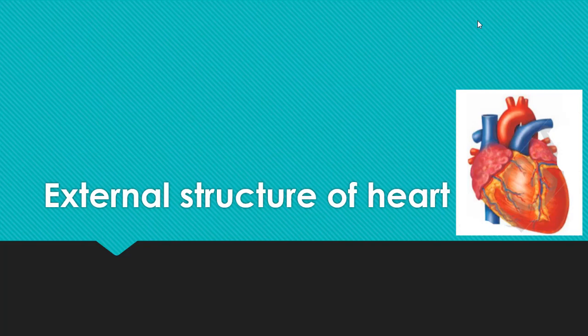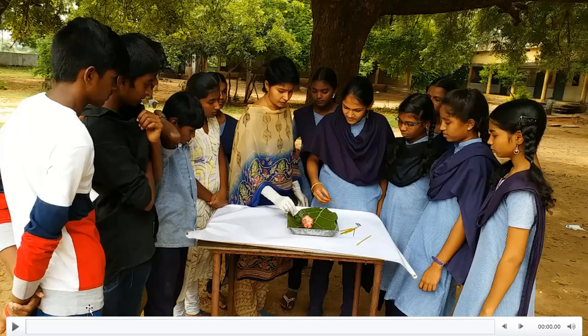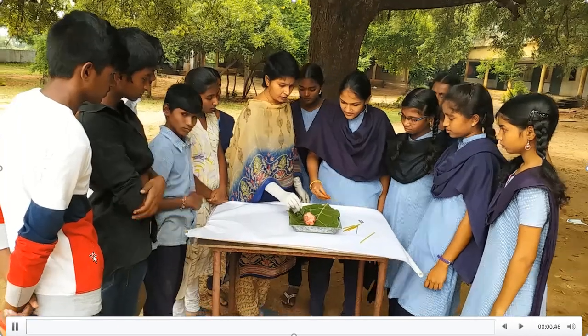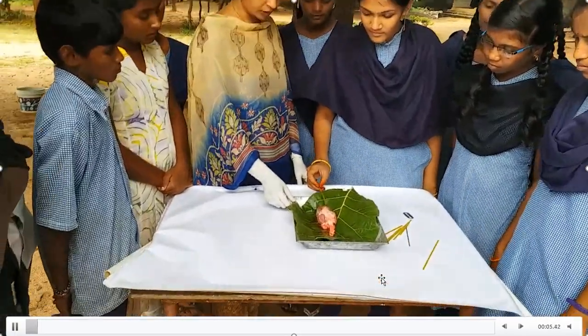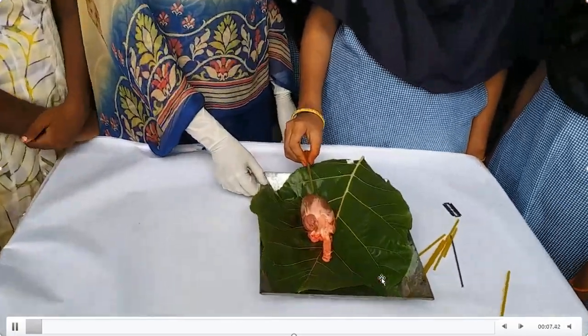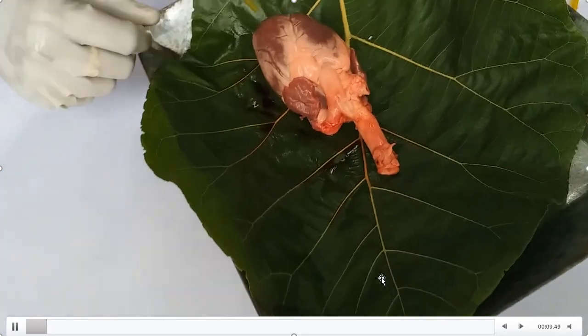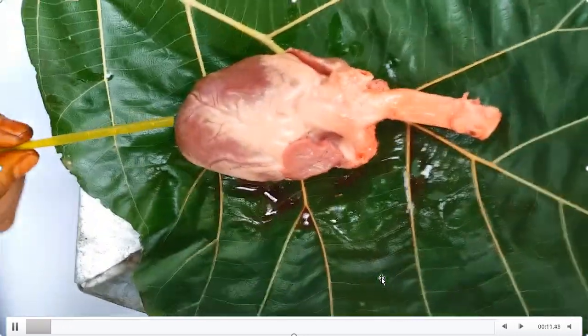Hello dear students, today we are going to learn about the external structure of the heart. Let us observe this lab activity done by my students. Here we are going to observe the heart of a goat or sheep. This is a freshly taken one. Observe the shape of it first — what is the shape of the heart? Pear or triangular?